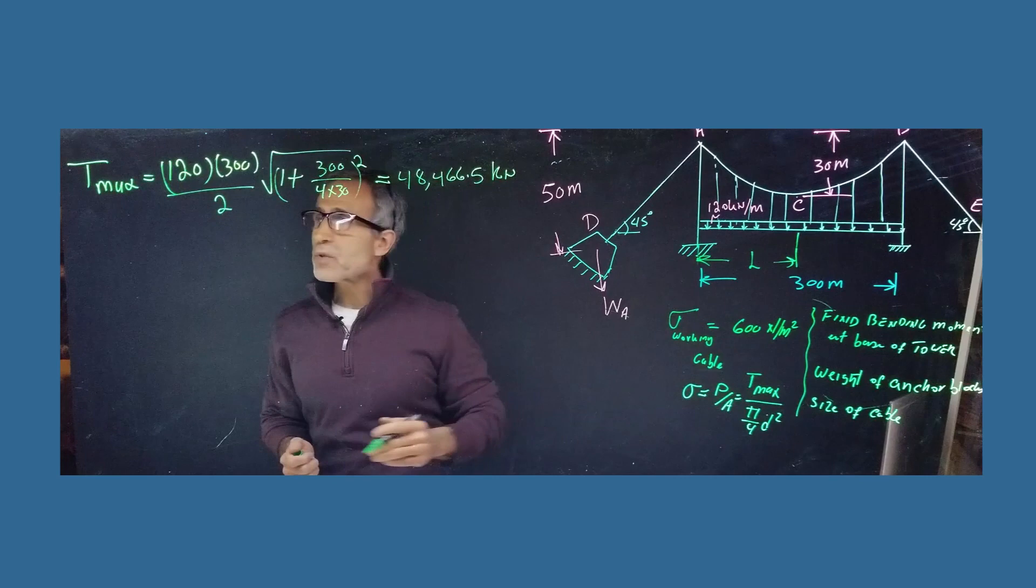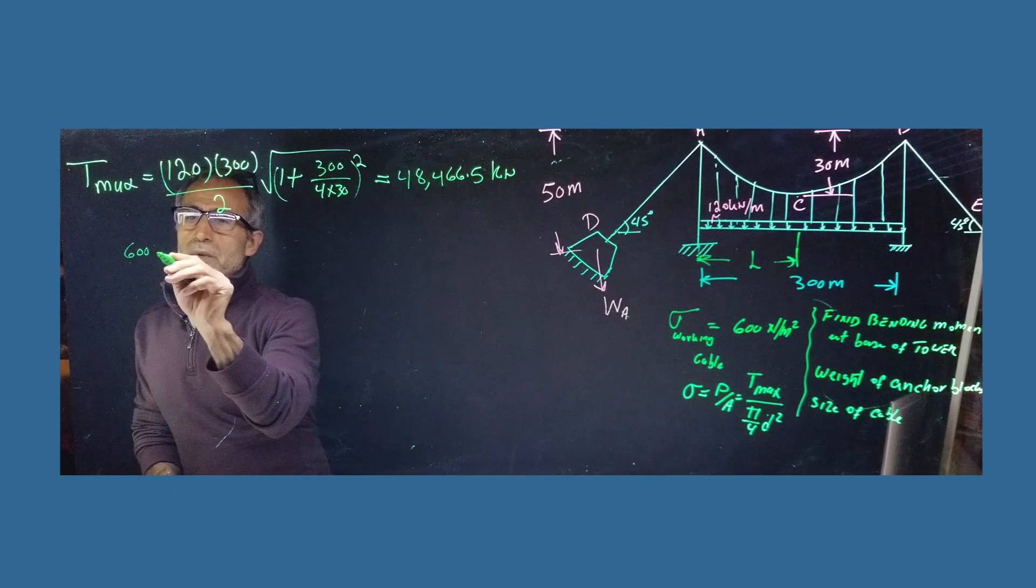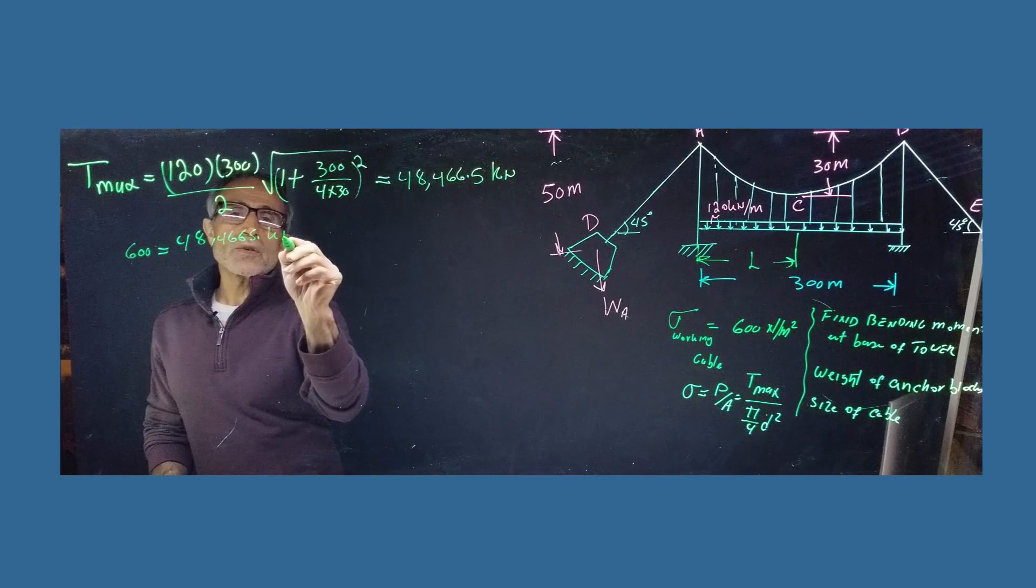So let's use that formula and come back in here. We're going to say, okay, stress, which is, came out to be 600 Newton per meter square, 600 Newton per meter square,